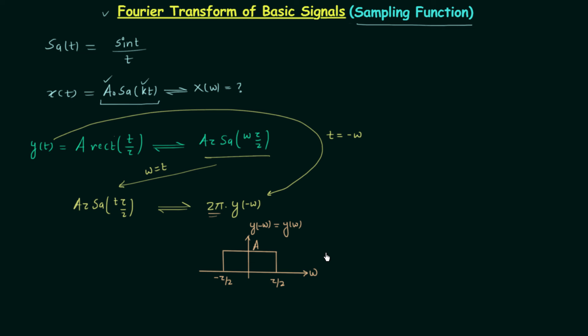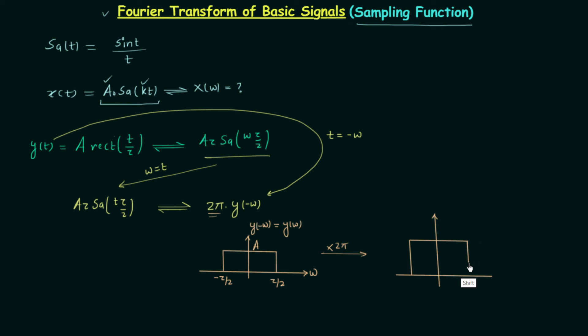Since y(−ω) has the same waveform, we multiply by 2π and obtain a similar waveform but with increased amplitude. The amplitude becomes 2π·a. The frequency axis spans from minus τ/2 to τ/2. This is the final waveform of the Fourier transform, which is 2π·y(−ω).